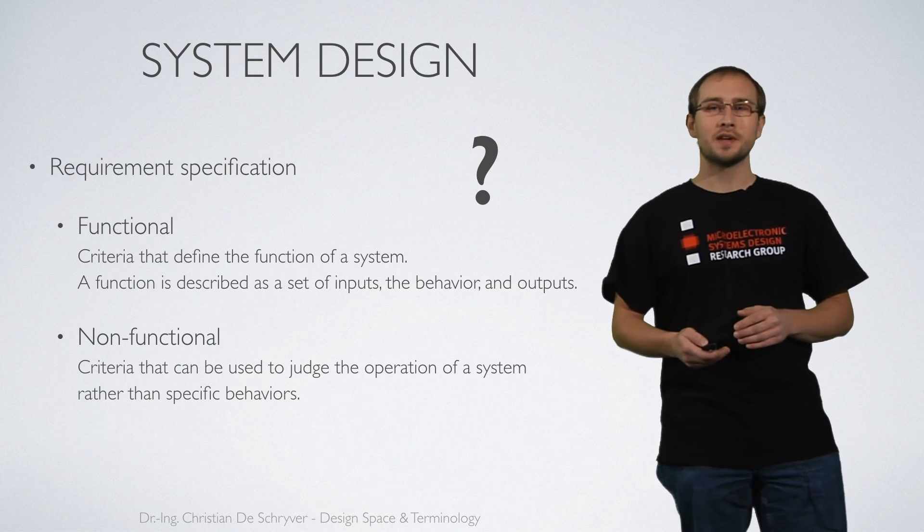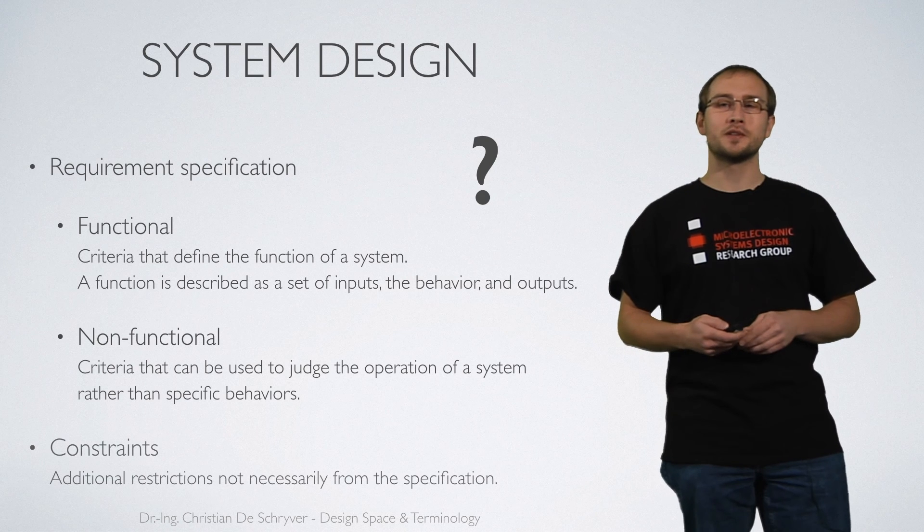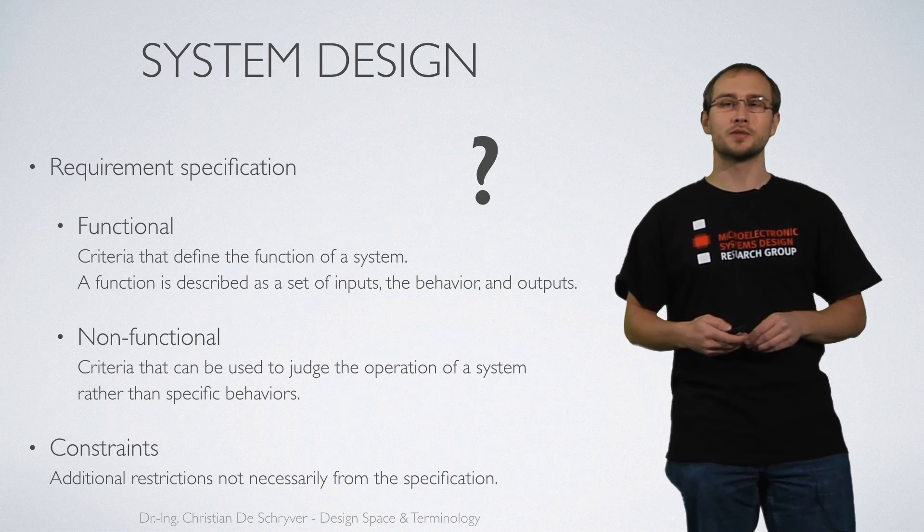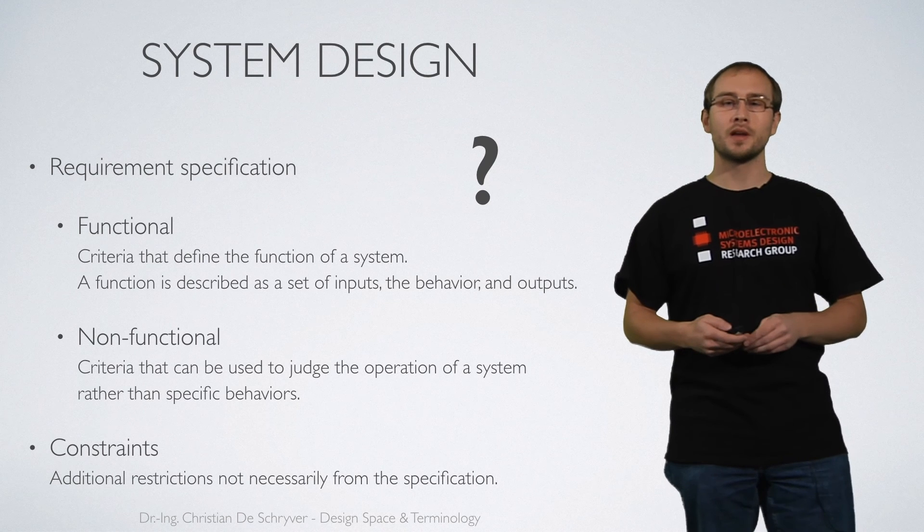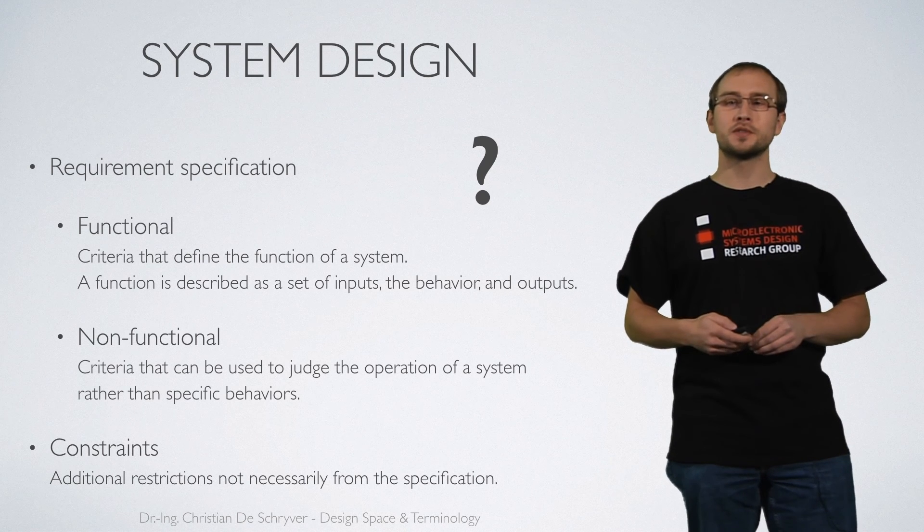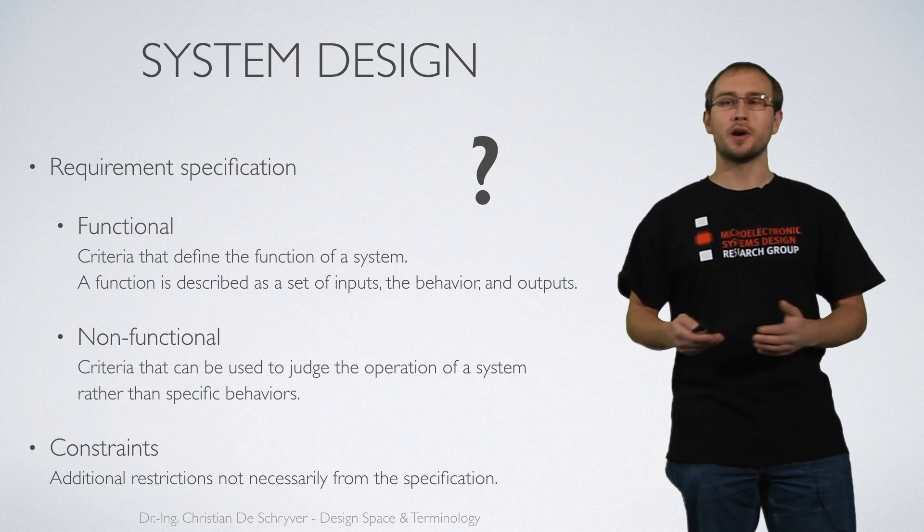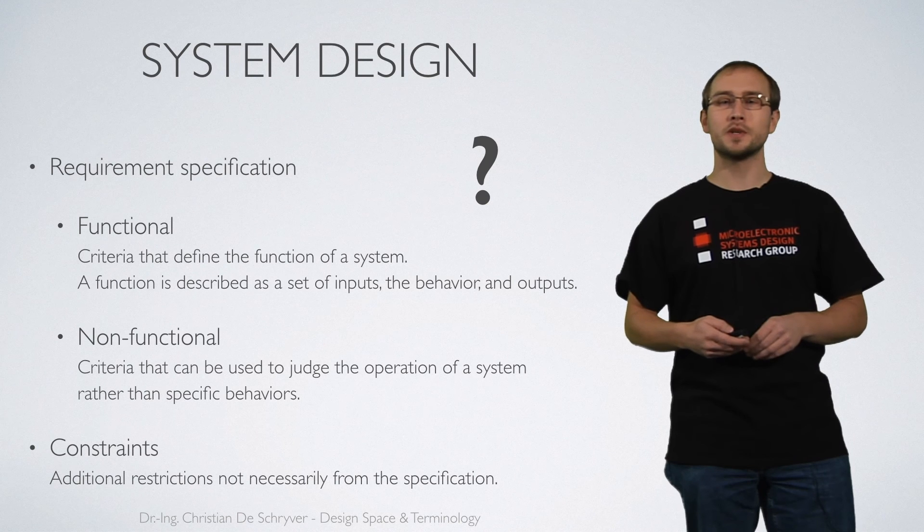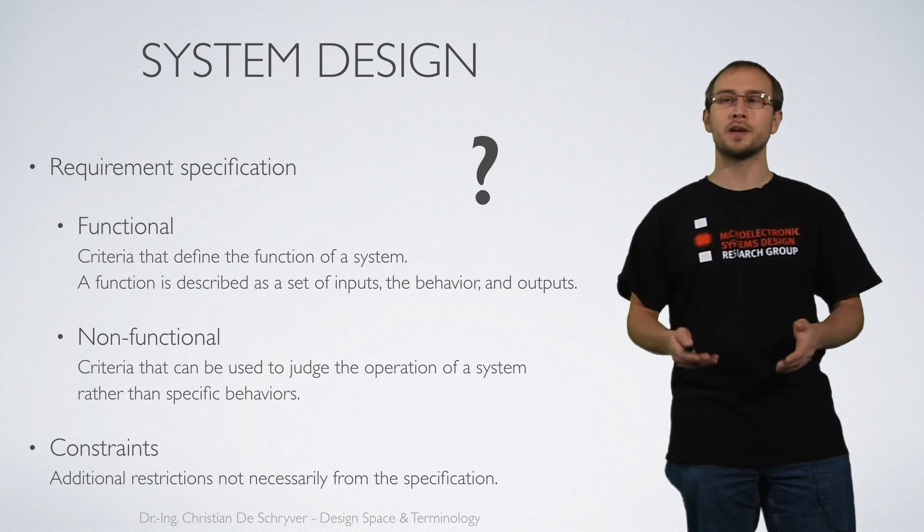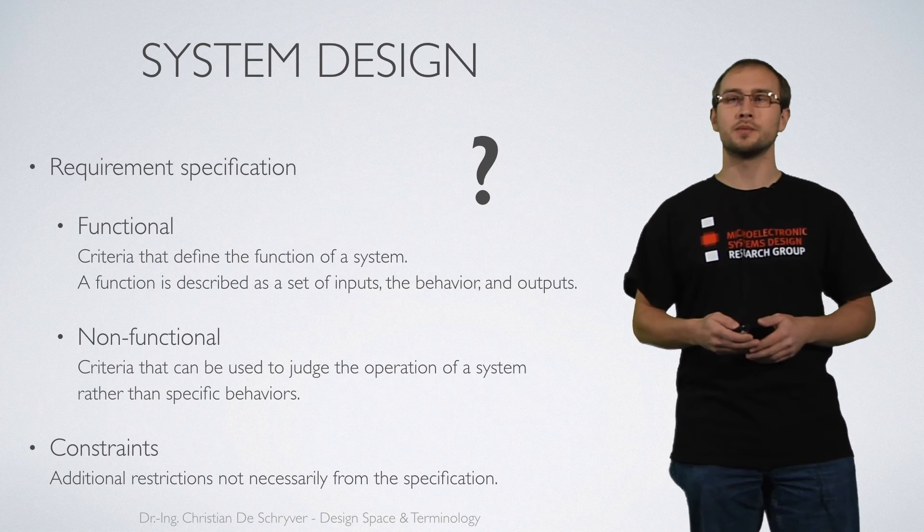Besides the requirements more things might influence the decisions that you take in the system design process. This is what we call constraints. Constraints can be imposed either by yourself, by your company, by your boss or by the customer. Constraints are restrictions that can come from everywhere and that influence your design flow.